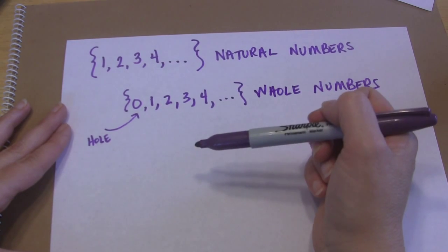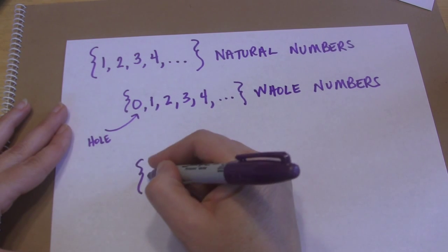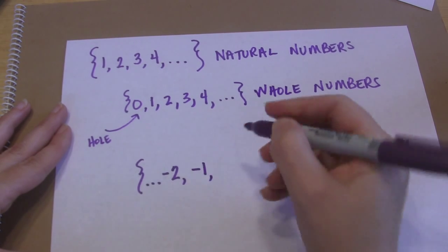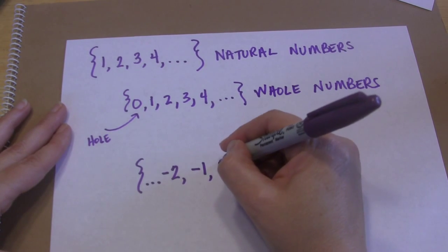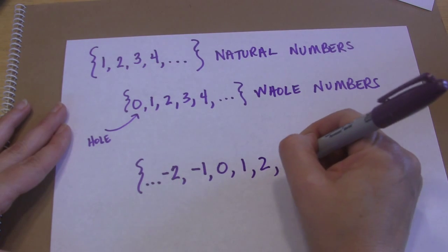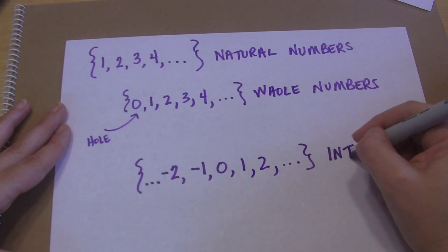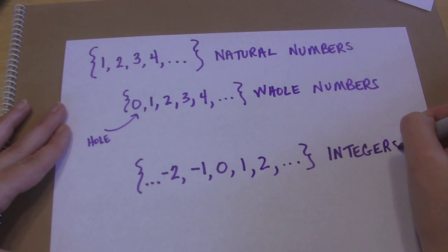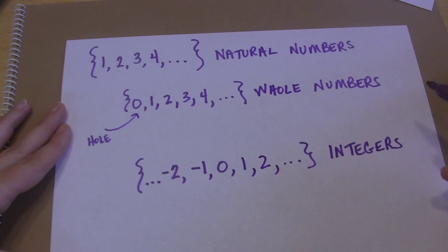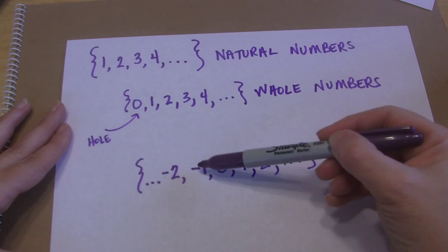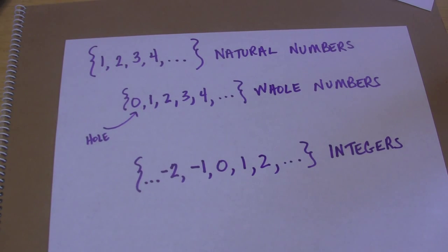Now you've progressed in math and you have learned that there are also things called negative numbers. You can have a negative two, a negative one, a zero, a one, a two — you can keep going. And these are given a special name called integers. Similar to the whole numbers, except now also includes these negative numbers as well.